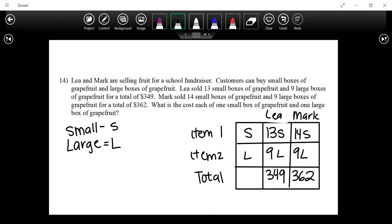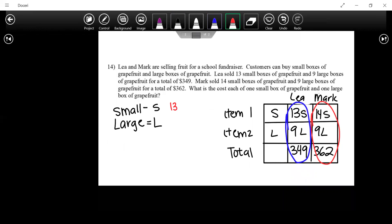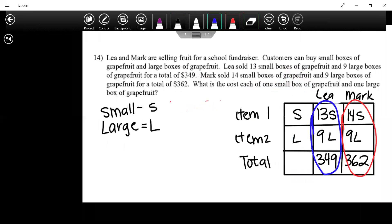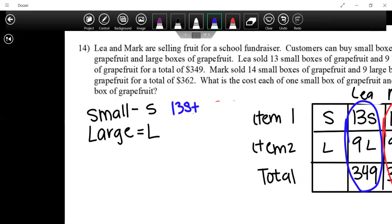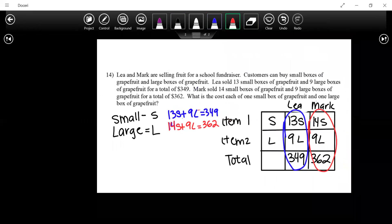Okay, so we have the context of our problem. We're going to go ahead and say that each column that we have here is an equation. So we're going to get 13S plus 9L equals 349. Our red one is going to be 14S plus 9L equals 362. What type? This is definitely a system. So what type of solving are we going to use?